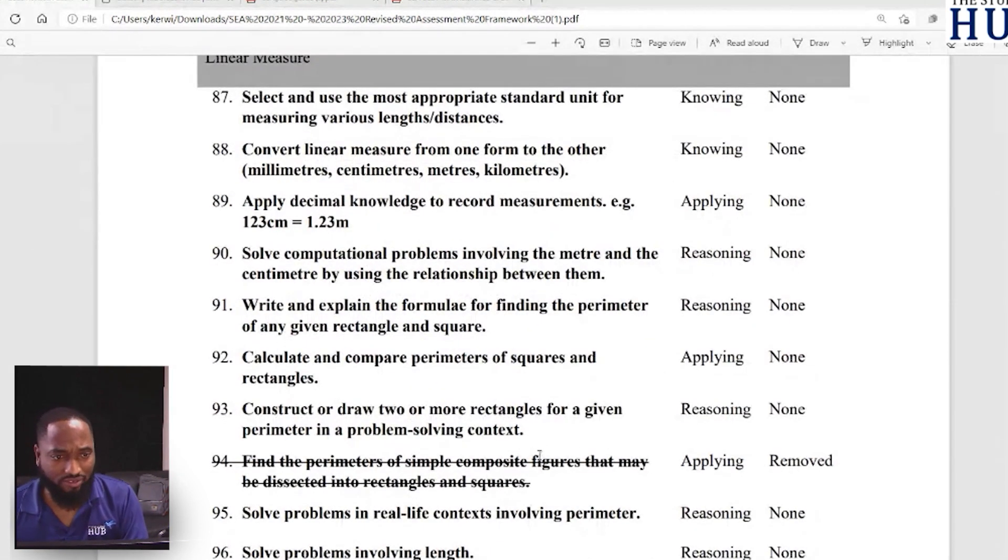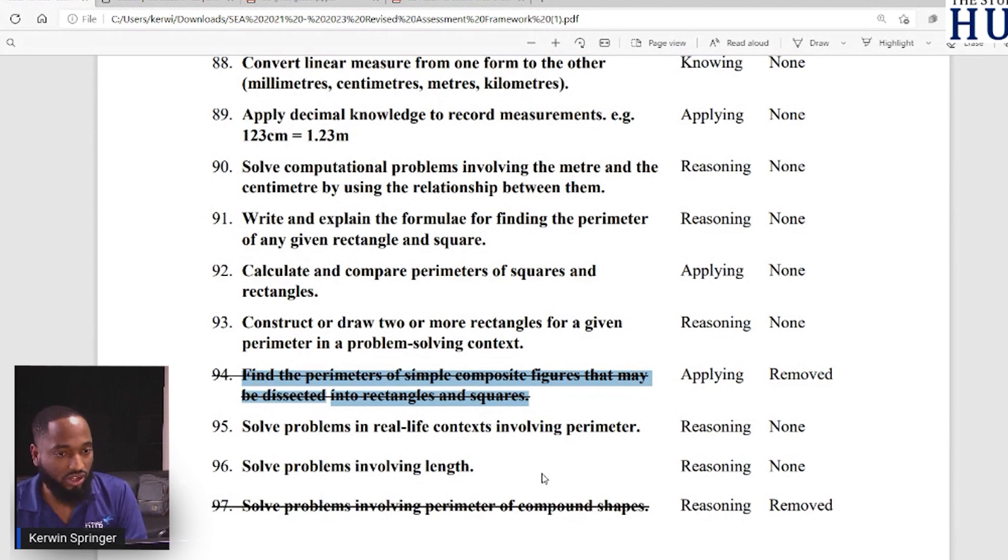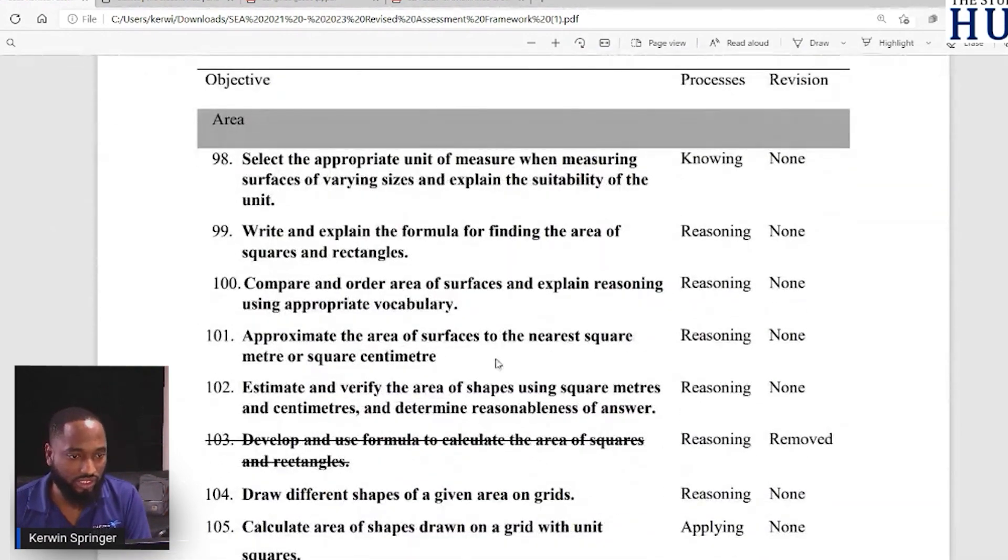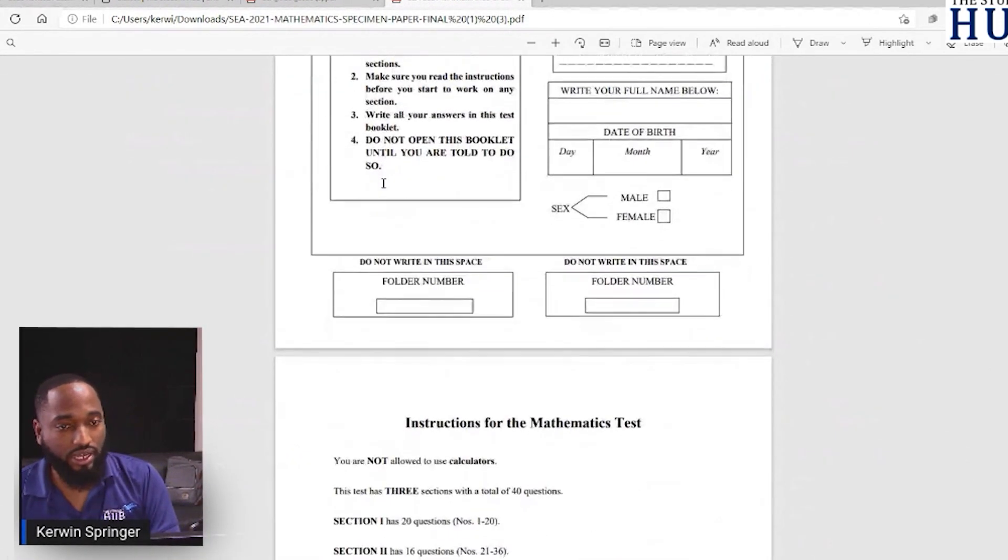Finding perimeters of simple composite figures - this pops nearly every year, finding perimeters when you have composite figures that may be dissected into rectangles and squares. This can sometimes be time consuming for students, but it's out. Solve problems involving perimeter of compound shapes - similar - that's out. Sometimes they have two separate shapes in grids and they want you to compare and find perimeter. That's all out. Develop and use formula to calculate the area of squares and rectangles, estimate and verify the area using square meters - those things are still in.